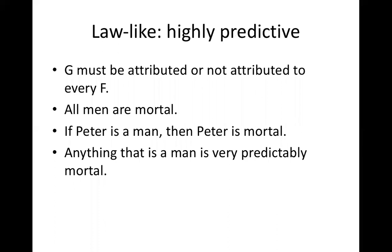A law-like hypothesis is highly predictive. If you say that all members of a class have a particular characteristic, then any identified member of that class must have that characteristic. Because law-like hypotheses refer to all members of the class, they are highly predictive — they have already alleged that all members in a certain class have a certain quality. For example: all men are mortal, Peter is a man, therefore Peter is mortal — anything that is a man is very predictably mortal.